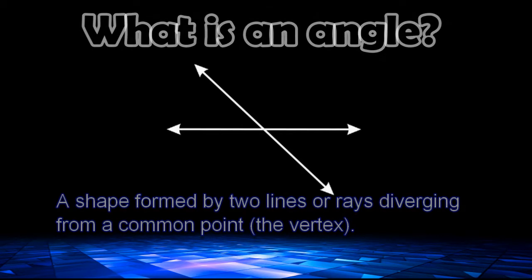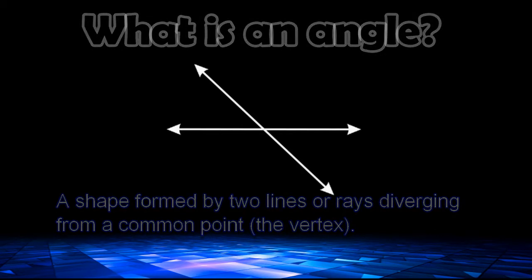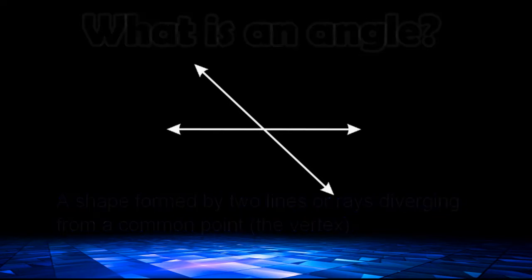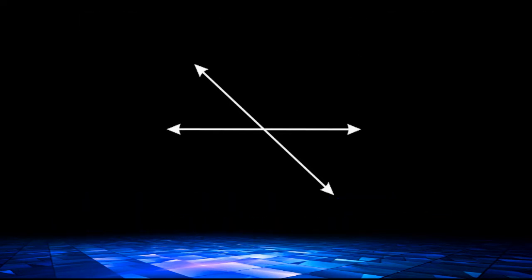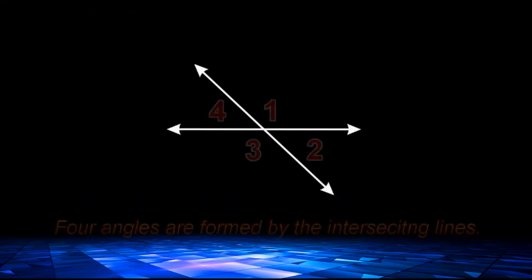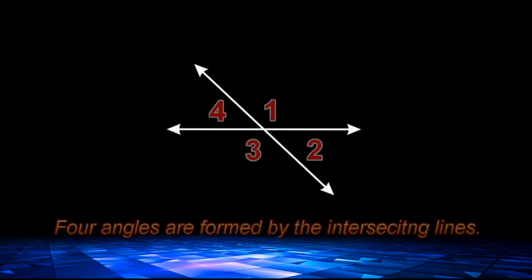So when you see two lines intersecting each other, you can always notice these corners being formed. We can see that these two intersecting lines form four different angles.